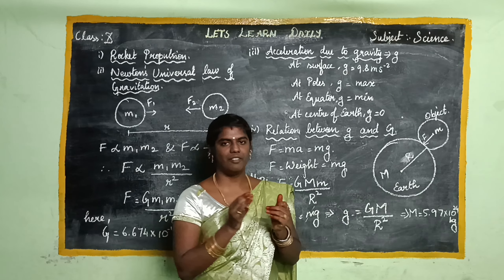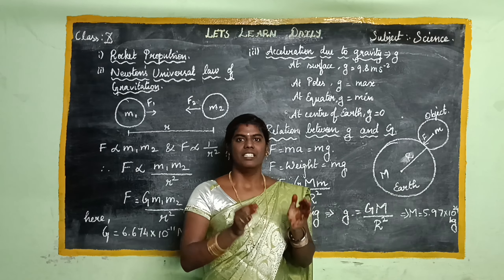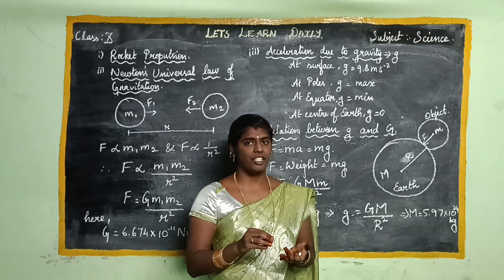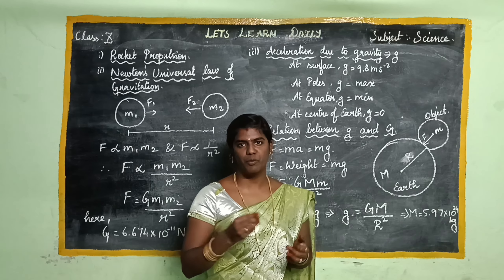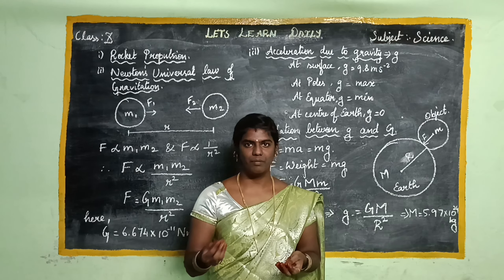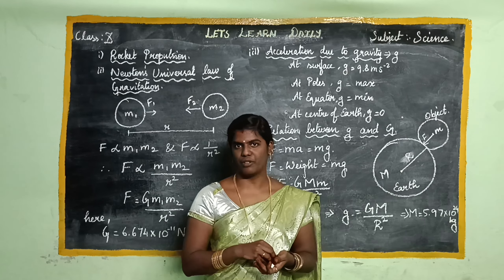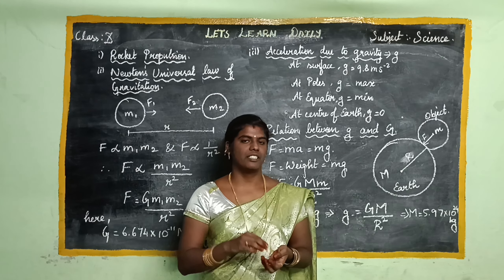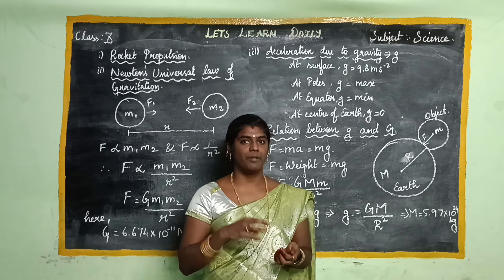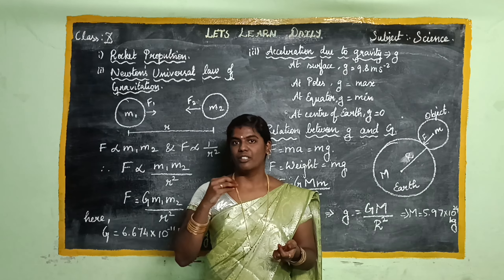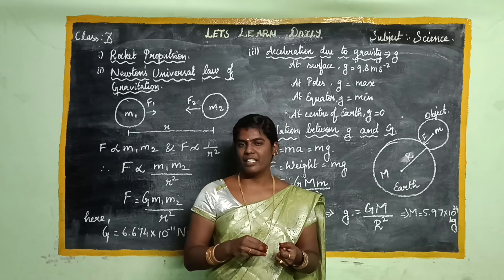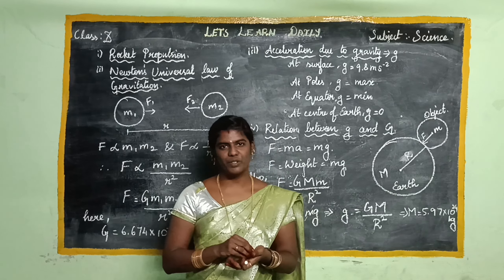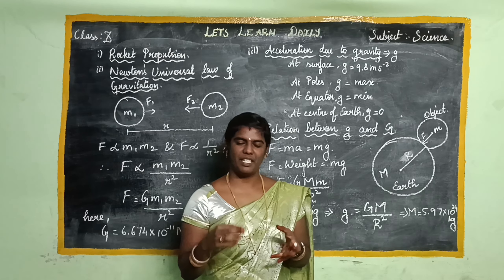First, the rocket has a fuel propellant tank. The fuel propellant tank stores the fuel. When the fuel propellant is expelled, the rocket is moved forward.